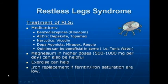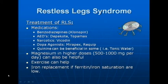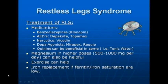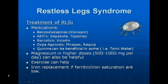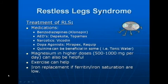To treat restless legs: benzodiazepines such as Klonopin can be very successful; certain anti-epileptic drugs such as Depakote and Topamax; narcotics such as Vicodin. Dopa agonists are FDA-approved, including Mirapex and Requip, and most patients are on those. Quinine can be beneficial in some patients — it's still available in tonic water. Magnesium is an over-the-counter supplement that can sometimes be very helpful. And iron replacement can be very helpful, especially if iron and ferritin levels are shown to be low.